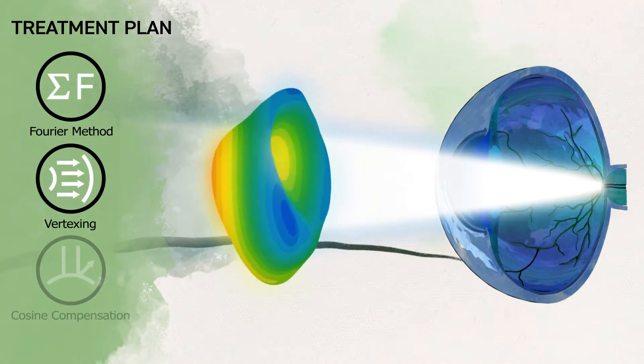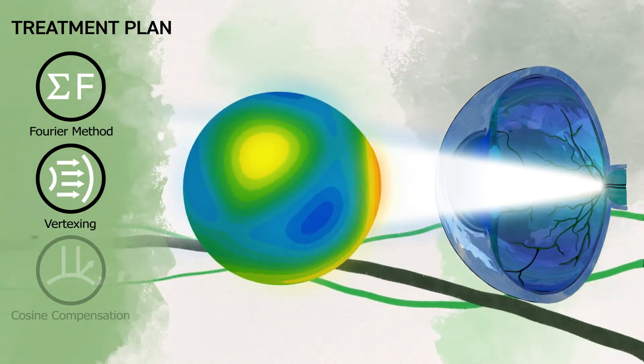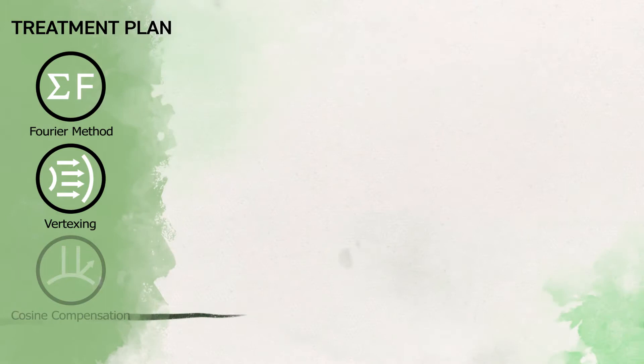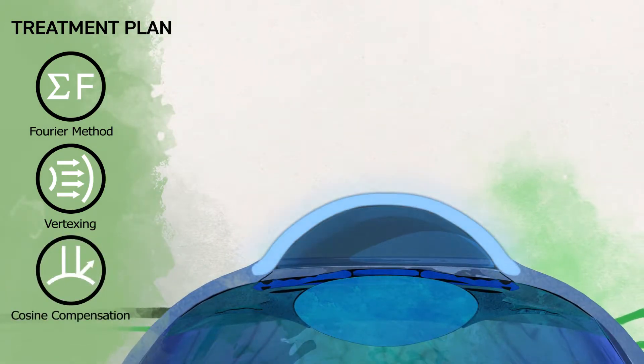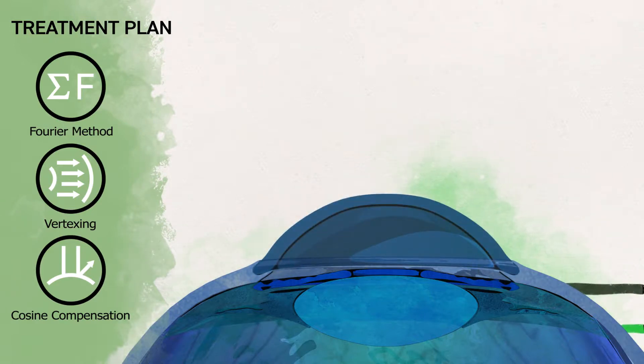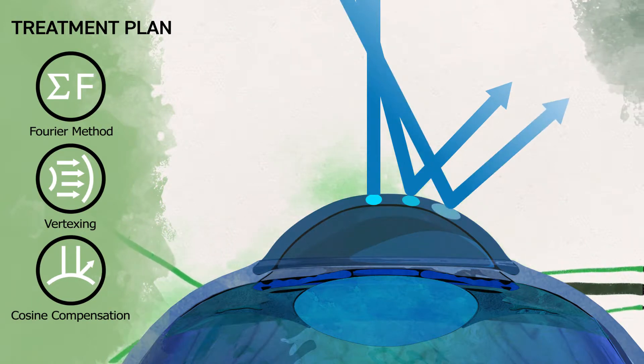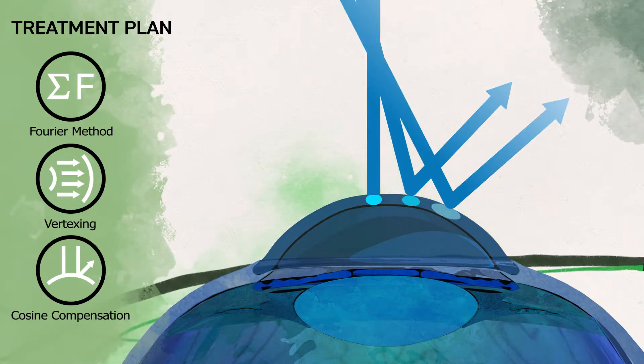This plan defines exactly how much corneal tissue should be removed from each specific spot. Next, the eye design system considers how the excimer laser will interact with the cornea. To precisely perform the treatment on the cornea's curved surface, the laser must compensate for energy loss at specific points by applying greater energy to accurately ablate the peripheral areas.